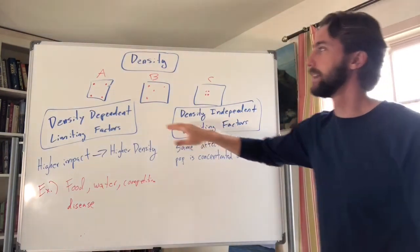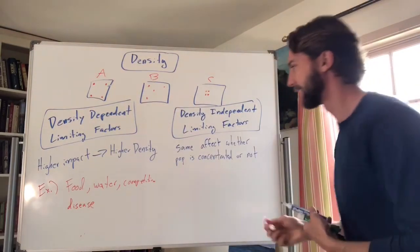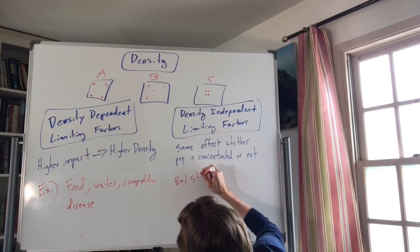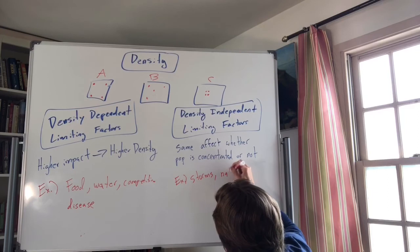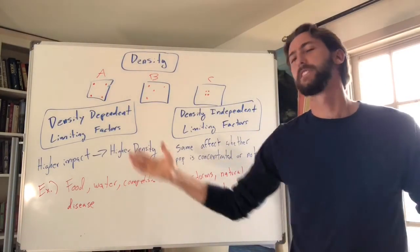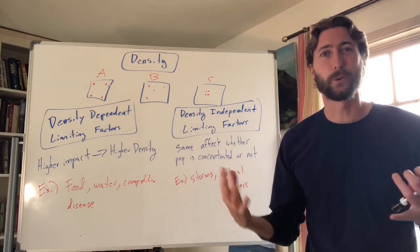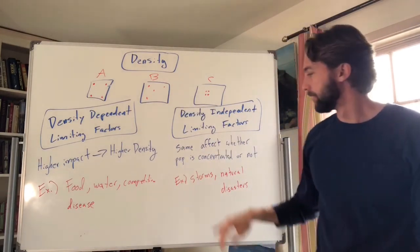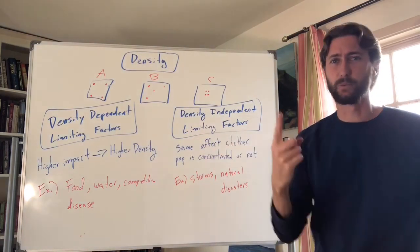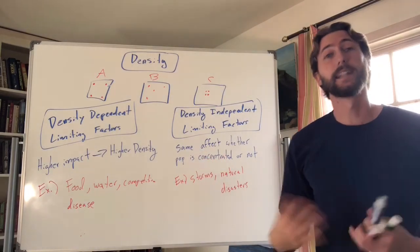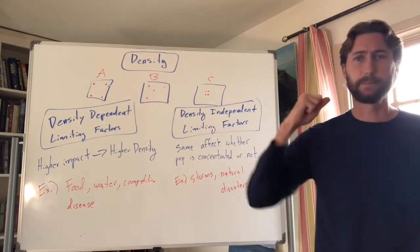Density independent limiting factors don't depend on whether individuals are close together or far apart — the effect is the same. Examples include storms and natural disasters. If there's a forest fire that burns down an entire forest, it doesn't matter if there's one deer or three thousand deer — they're all going to be affected. That's independent of the density.